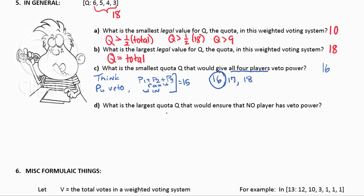The next question says, what is the largest quota Q that would ensure that no player has veto power? Now, if no player has veto power, let's think about it backwards. If anybody is most likely to have veto power, or as we're looking for veto power, we often say, if player one doesn't have veto power, then nobody will. Because if you can't stop people with six votes, you're not going to be able to stop them with five. So I'm going to think, all right, I want player one to not have veto power. Because if I can keep player one from having veto power, the rest of them.